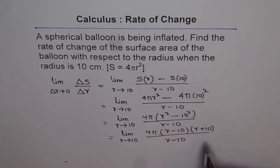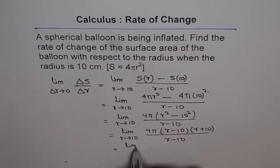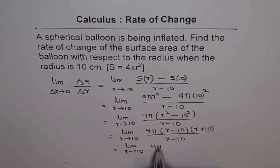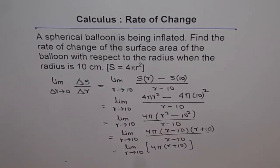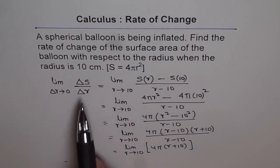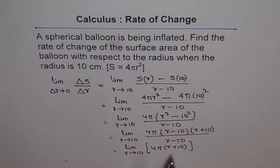So 1 times anything is the same number. So we can write this as equal to limit r approaching 10 and we are left with 4 pi r plus 10. Do you see that? So this is the rate of change, the instantaneous rate of change of surface area with respect to the radius when radius is approaching 10.